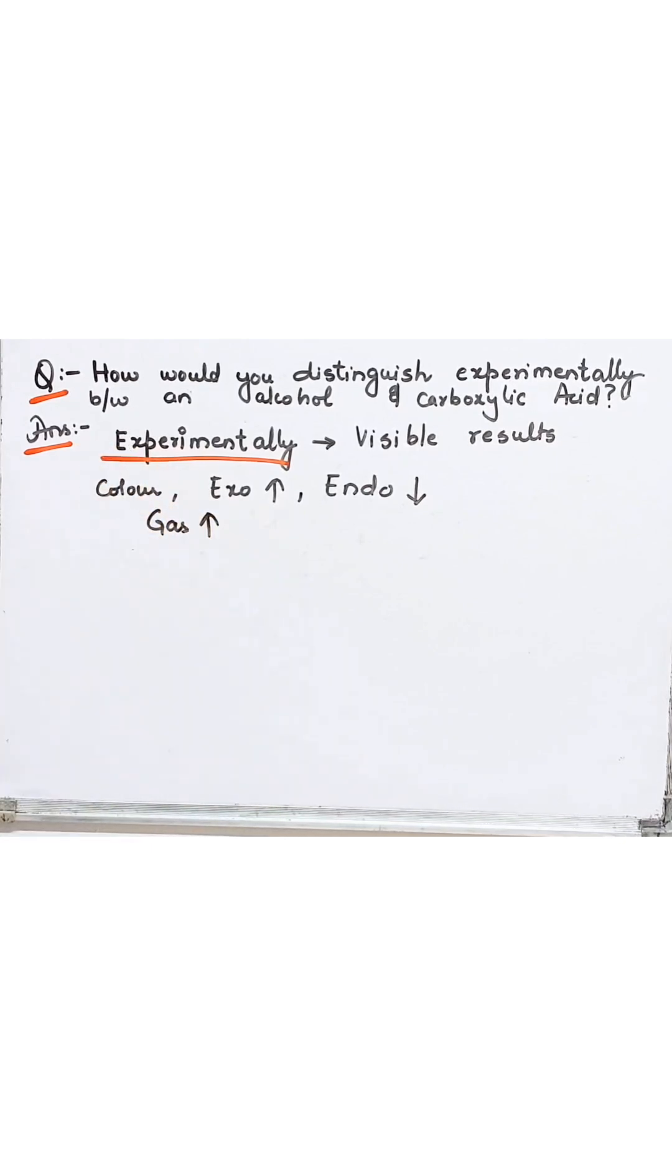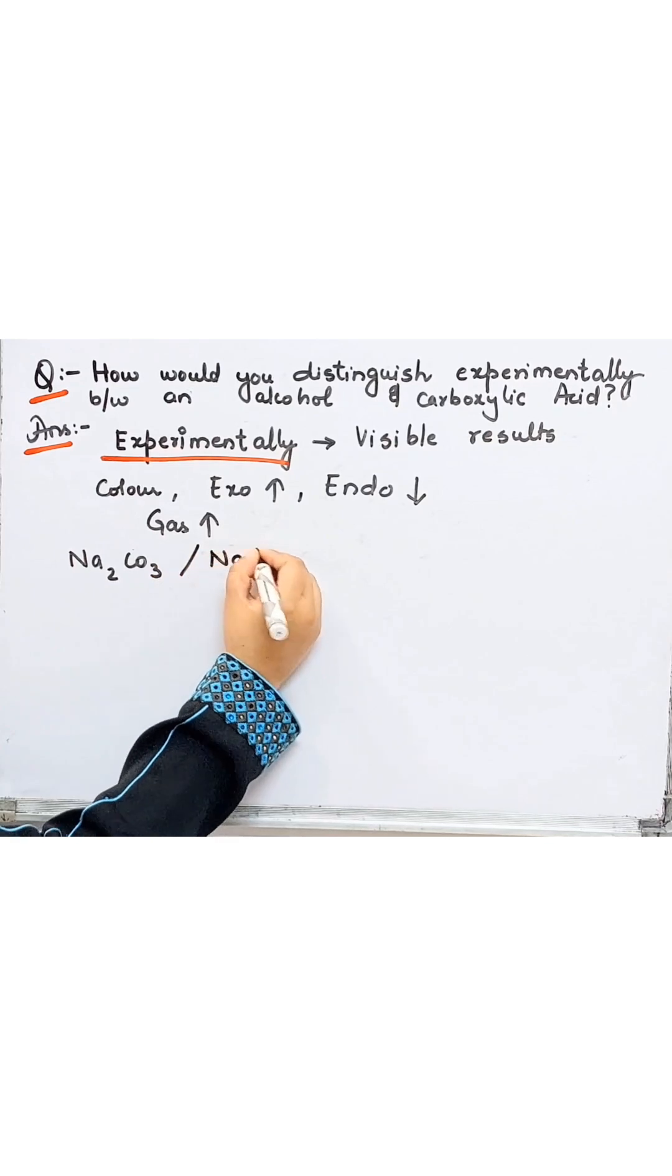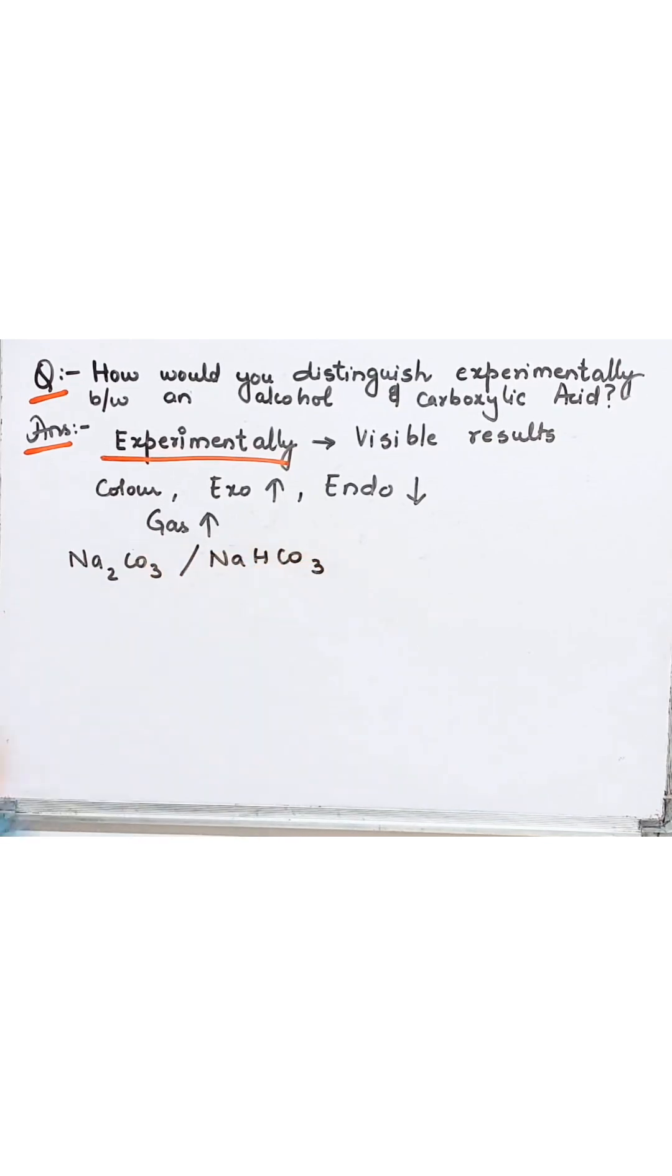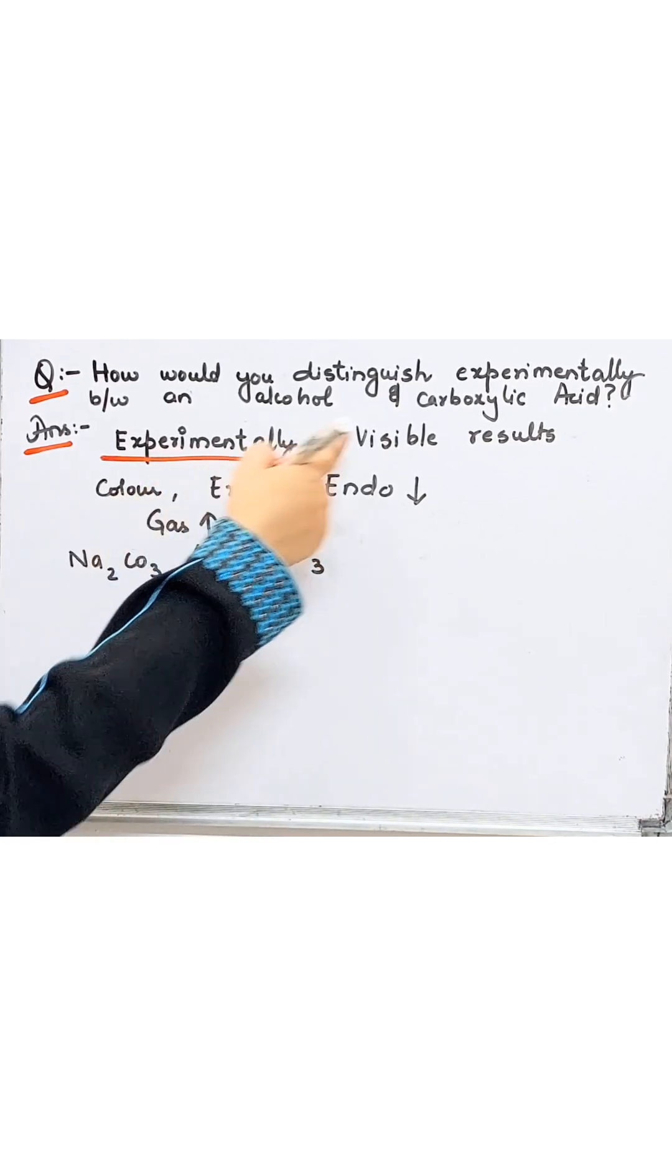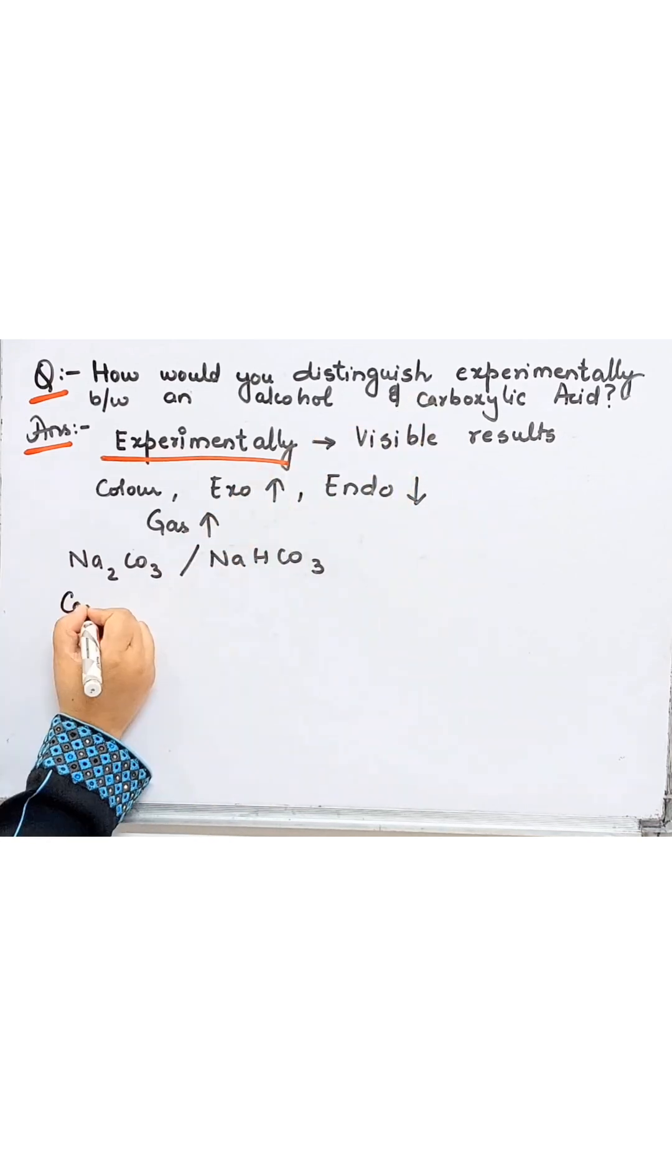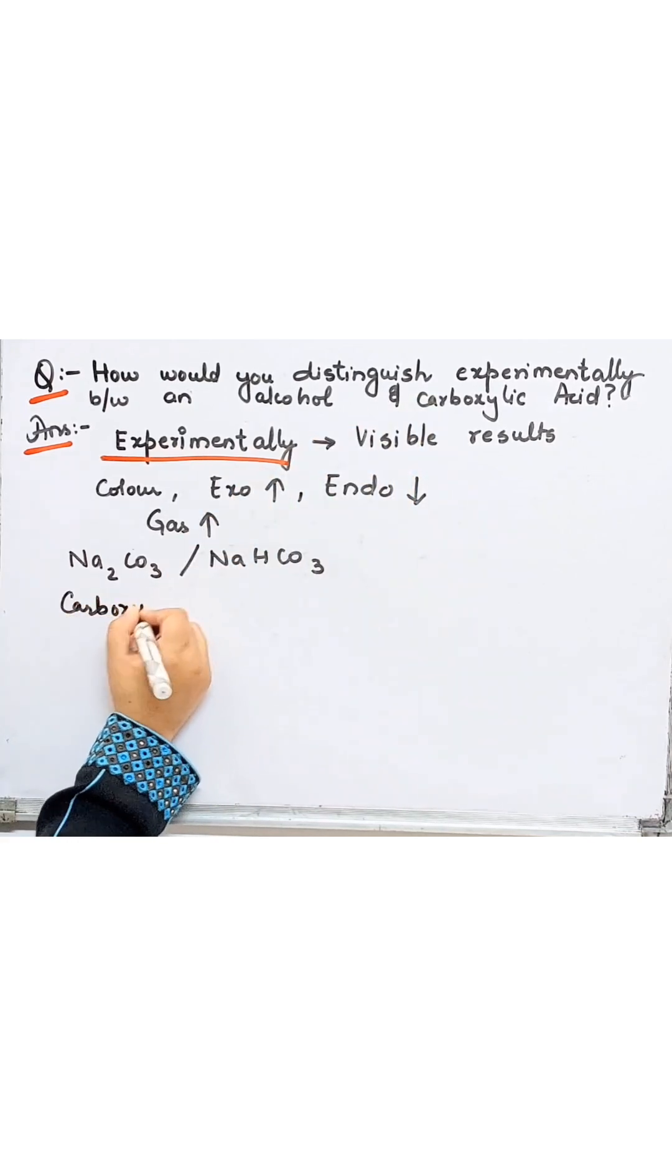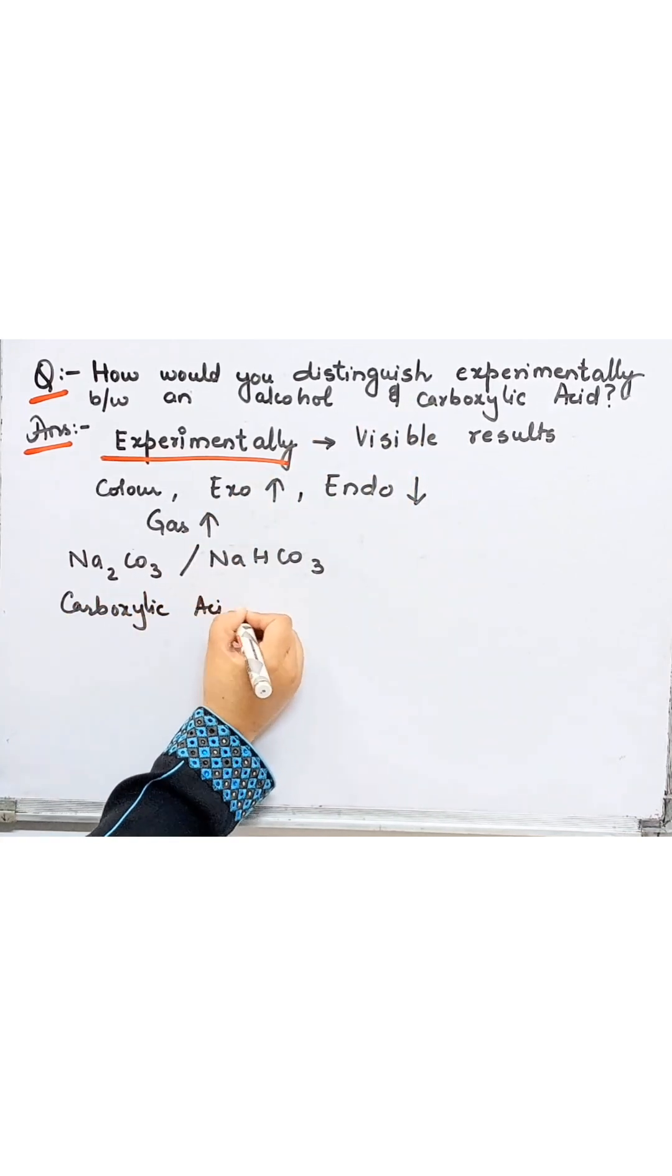These are the things which could be done experimentally. If you have sodium carbonate or sodium bicarbonate, these are basic in nature. So when base reacts with carboxylic acid, what happens is carboxylic acid plus a base.